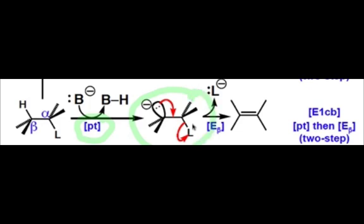This intermediate can generate an alkene via a beta elimination process, and that also generates L-. This is called the E1CB pathway, and it's called that because the intermediate that's generated is an anion and is the conjugate base of the starting material.